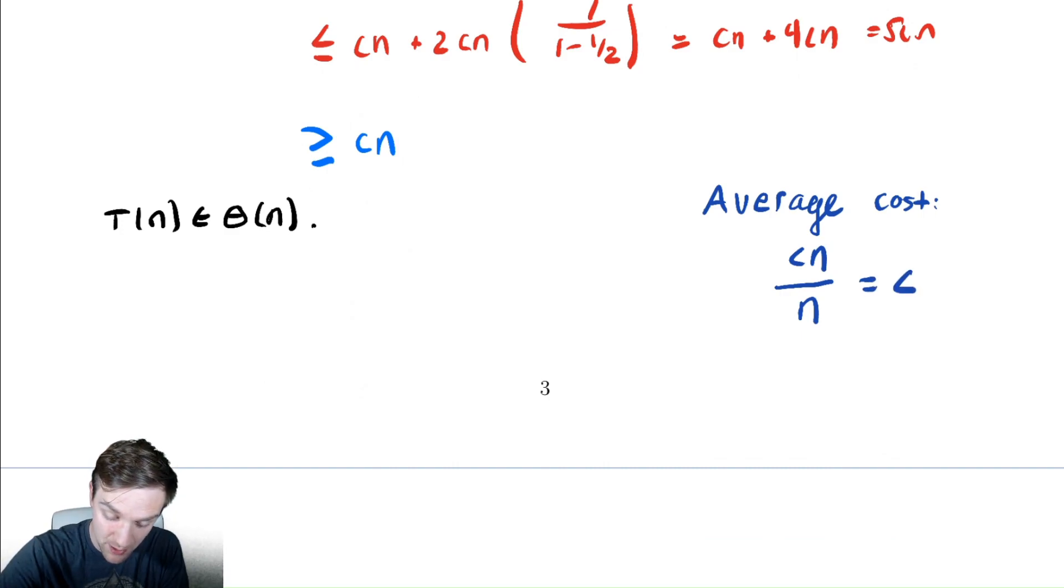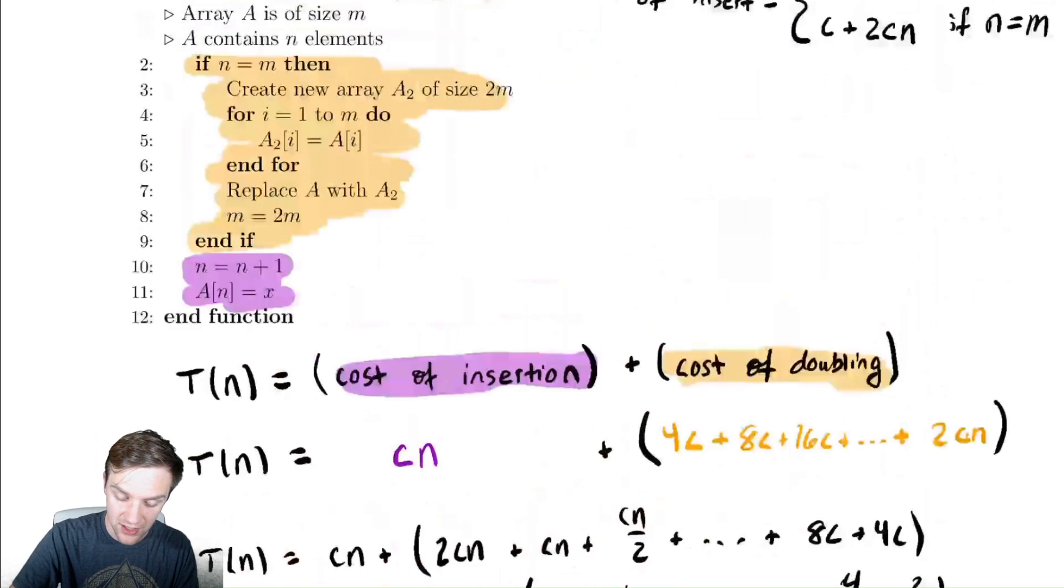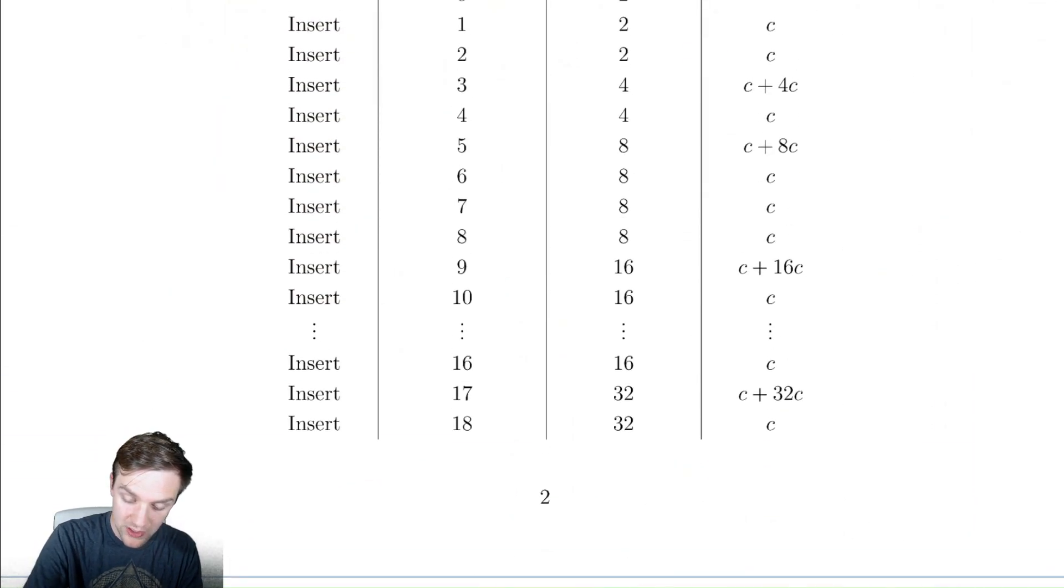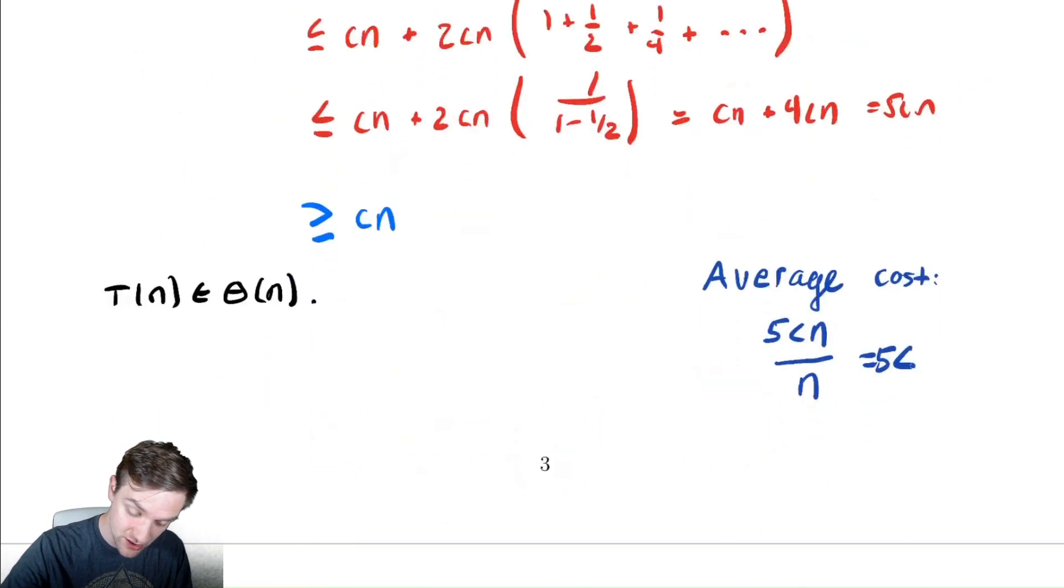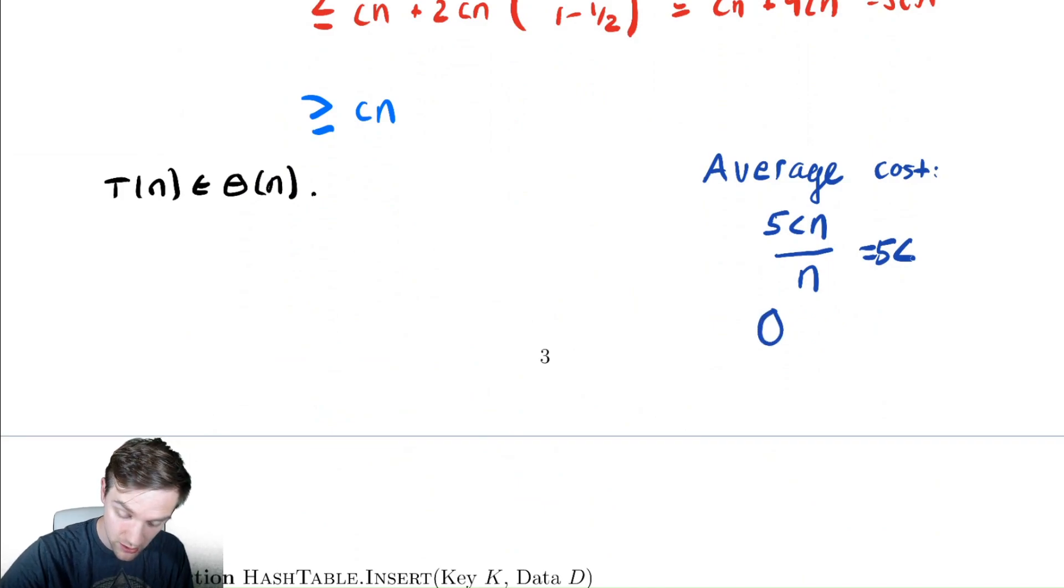If we want to be more precise, maybe we'd say 5c for upper bound. And that gives us an upper bound on the average cost. Notice that some of the insertions, if we scroll up, are going to take much longer than other insertions. And for a sufficiently large array, the probability of needing to double is going to be low on any given single insertion. However, some of them may take linear time. Thankfully, enough of them take constant time that it does not affect our asymptotic complexity. So our average cost of an insertion is in theta of one.